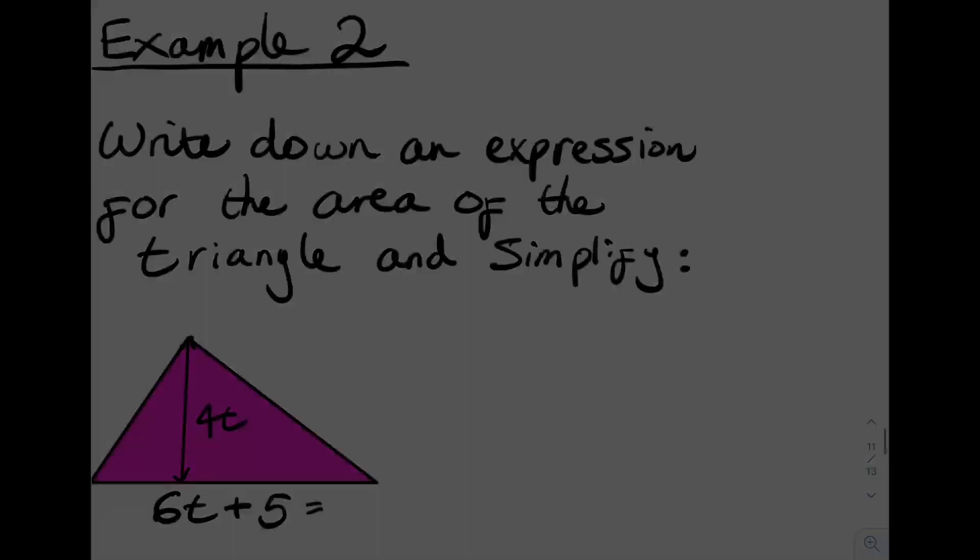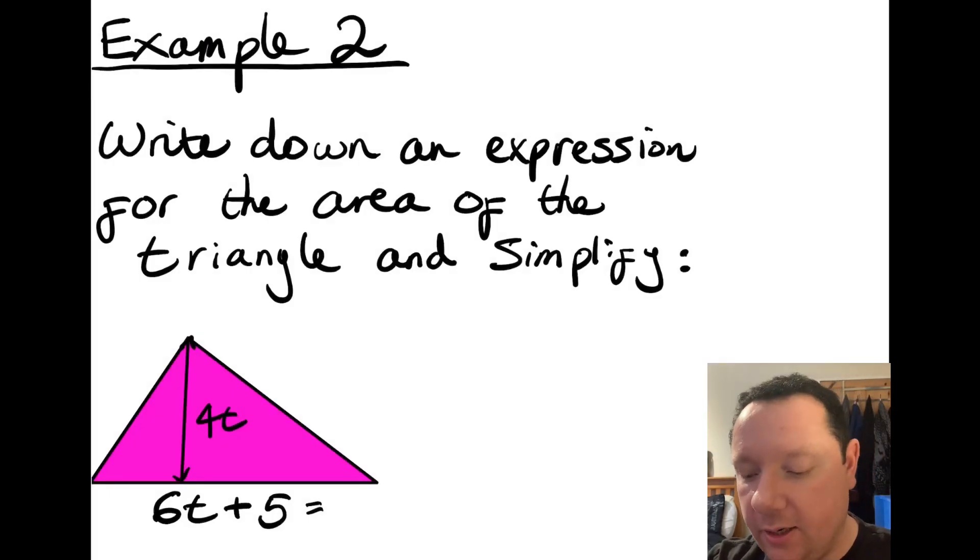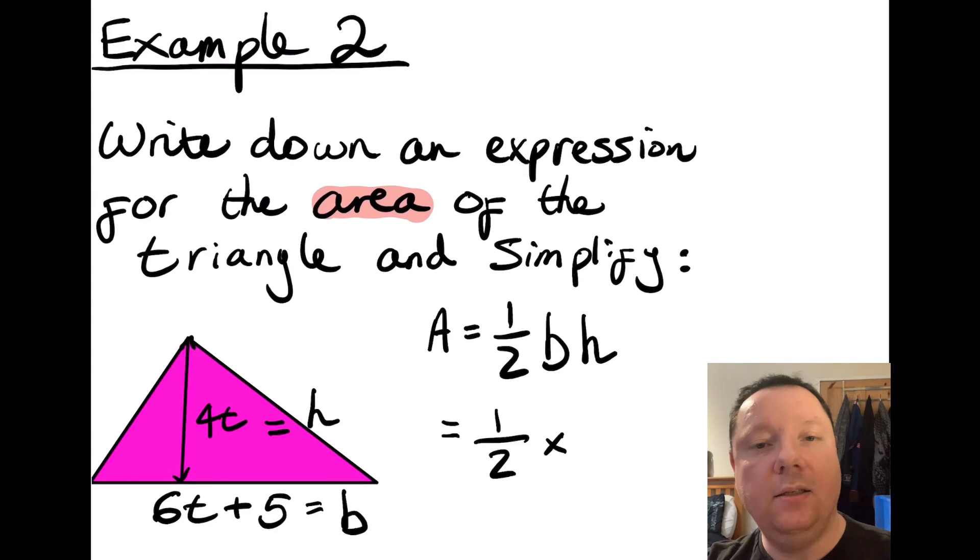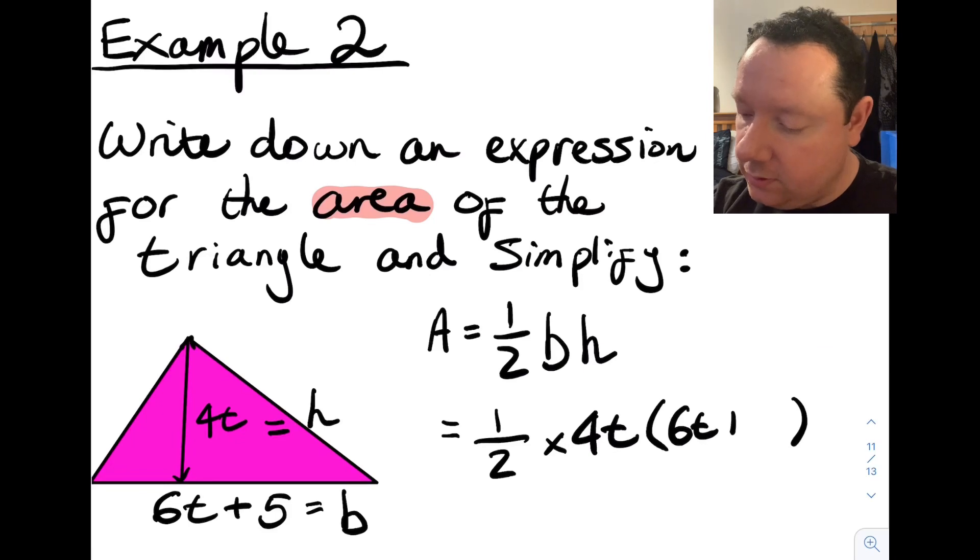Example 2 says write down an expression for the area of the triangle and simplify. So it's the same thing again. I have to identify what the question is actually asking me. It's something about area. So if I was doing this just with numbers, I would write down the formula for the area of a triangle. Area is a half the base times the height. So identifying our base, 6t add 5, well, that's my base, and 4t is my height. So substituting that in, it's a half times. Now the base and the height doesn't matter what order you write them in because we're times in them. So I write the height first because that's the simplest thing. So it's a half times 4t times, so I'm opening a bracket because 6t plus 5 is 2 terms, 6t plus 5, because the 4t has to be times by both 6t and 5.